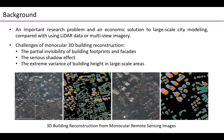However, the limited information of the monocular image also results in great challenges, such as the partial invisibility of building footprints and facades, the serious shadow effect, and the extreme variance of building height in large-scale areas.